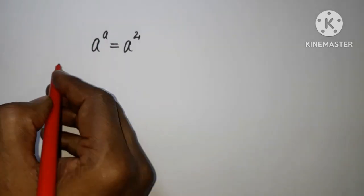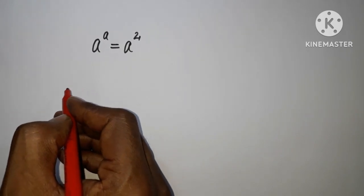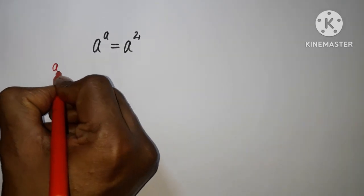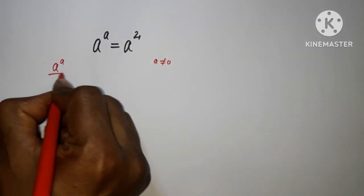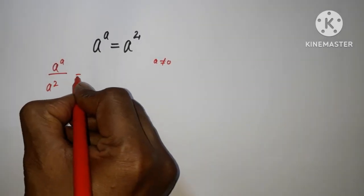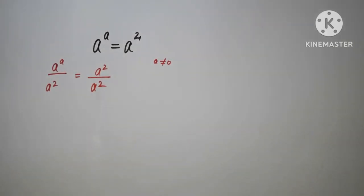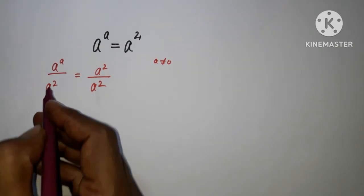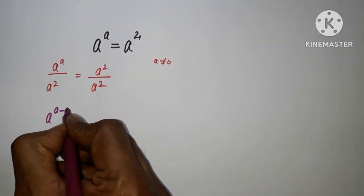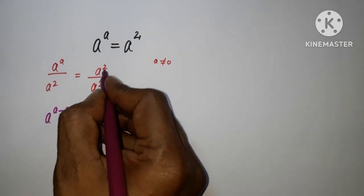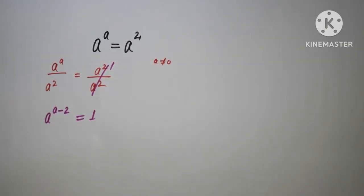We can divide both sides by a squared if a is not equal to 0. So a^a divided by a^2 and a^2 divided by a^2. This gives us a to the power a minus 2 equals 1.